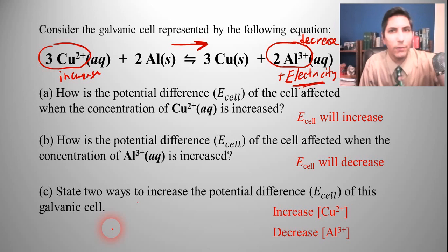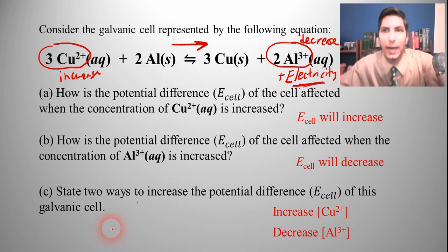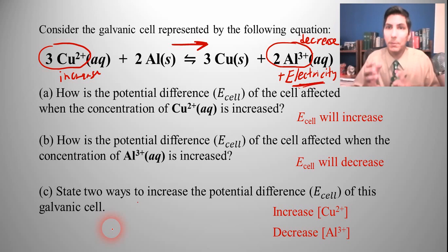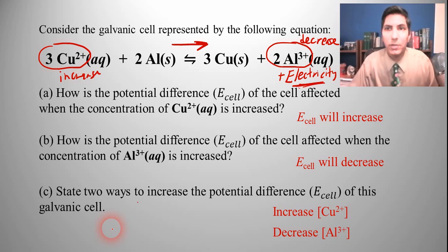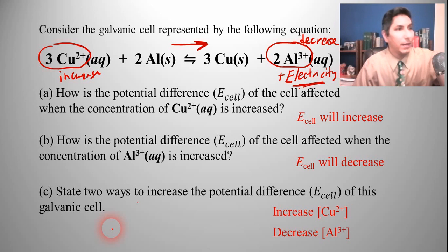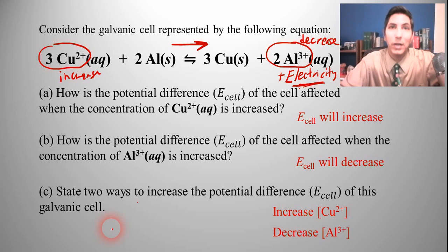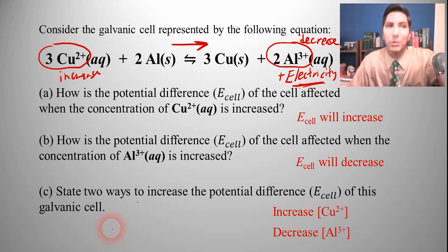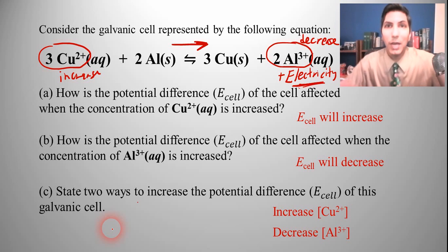We've covered several questions about the application of galvanic cells — many involving non-standard conditions where we manipulate concentrations using Le Chatelier's principle or stoichiometry. I hope you enjoyed this video. If you learned something, please hit the like button so YouTube recommends my videos to other chemistry students. My name is Jeremy Krug; I've been teaching AP Chemistry for multiple decades, and I want you to get a five on your exam or make an A in your class. Thanks for watching!